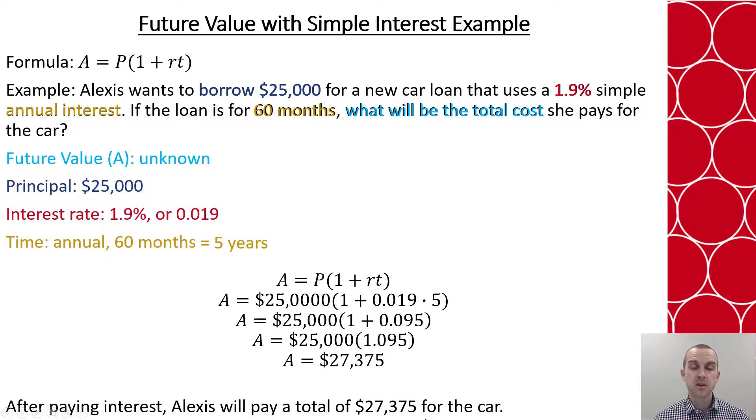Now I can multiply by the 25,000 to get that the total cost that Alexis will pay is $27,375 for the car. So she's paying about $2,400 in interest, but the total is what she needs to think about as it goes to what her monthly payment may be.